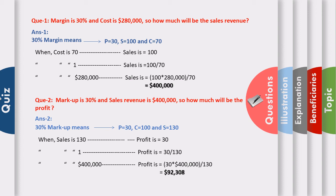Another question: margin is 30% and sales revenue is three lakhs and eighty thousand — what if margin and sales revenue is three lakhs and eighty thousand multiplied by 30%?